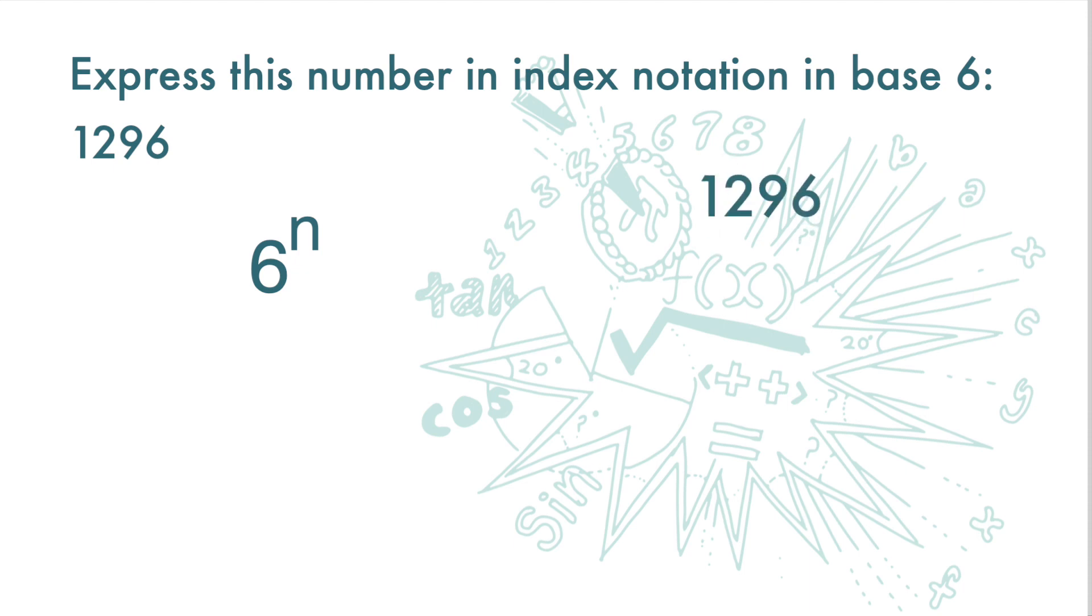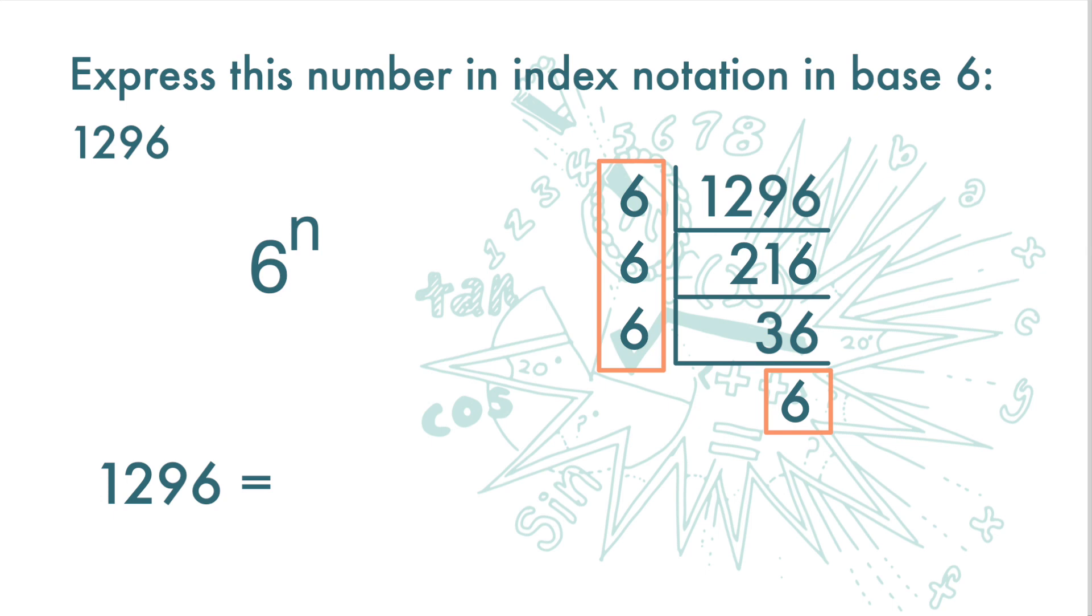We take 1296 and divide it by 6 and we get 216, and then divide by 6 again and we get 36, and then we divide it by 6 again and we get 6. So here we have 4 sixes. So 1296 is 6 times 6 times 6 times 6. So the answer is 6 to the power of 4.